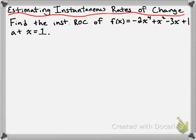Hey everyone, just wanted to go through an example of estimating instantaneous rates of change. So let's do the following example: find the instantaneous rate of change of f(x) = -2x⁴ + x² - 3x + 1 at the point x = 1.